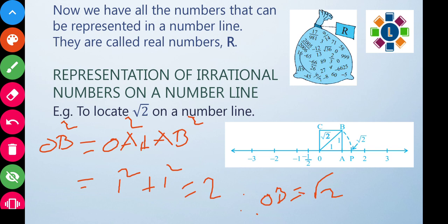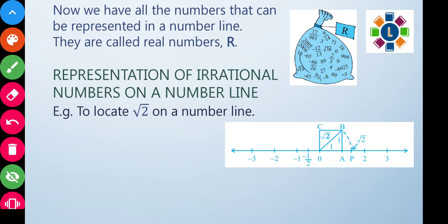Therefore OB equals root two. So OB has length root two. Now, using a compass placed at O with radius OB, we draw an arc on the number line. The point P where the arc meets the number line represents root two on the number line.